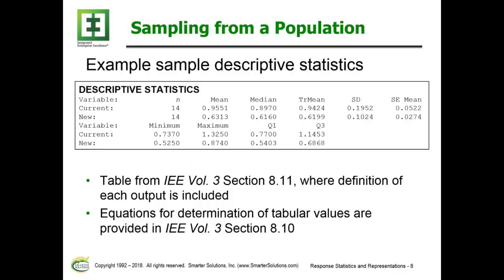If we analyze the data using descriptive statistics in Minitab, we can create a chart showing the overall average value of the sample, which we consider a best estimate for the population. However, that estimate has a confidence interval associated with it. The equations for making these calculations are covered in Section 8.10 of Volume 3.